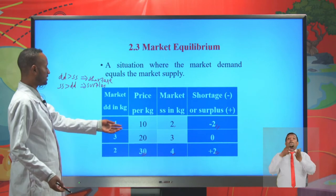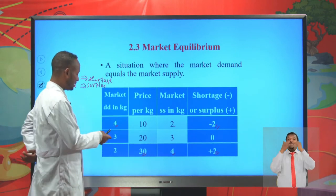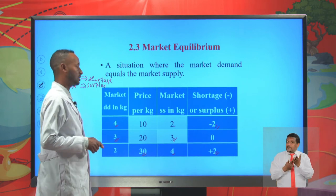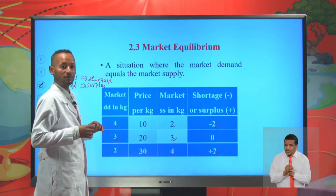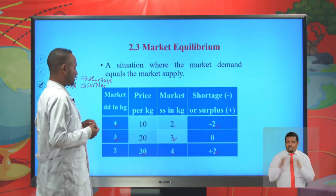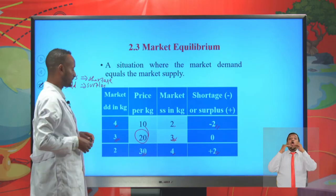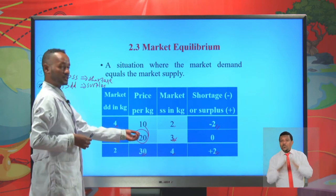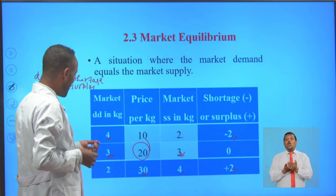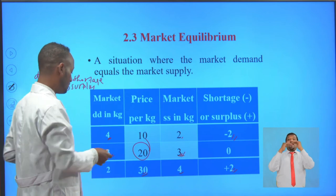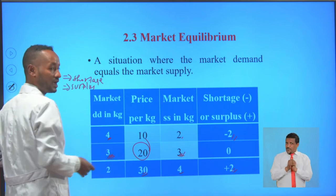When the price of a kilogram of orange is 20, the quantity supplied in the market is 3 kilograms, and at the same time the market supply of orange is also 3 kilograms. In this case, the market is at equilibrium — there is no shortage and there is no surplus. The price at which market demand equals market supply is called the equilibrium price, which is 20. The quantity at which market demand equals market supply is the equilibrium quantity, which is 3 kilograms.